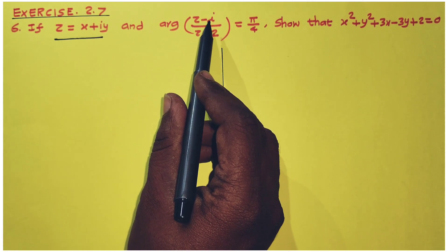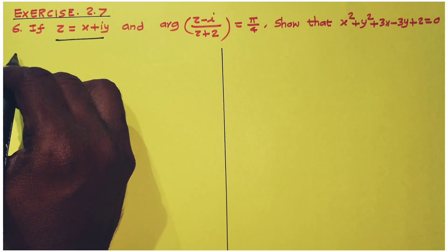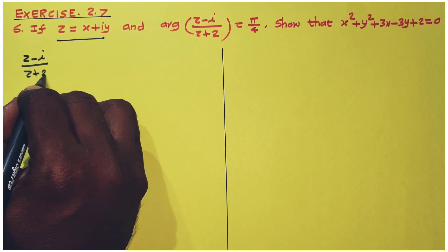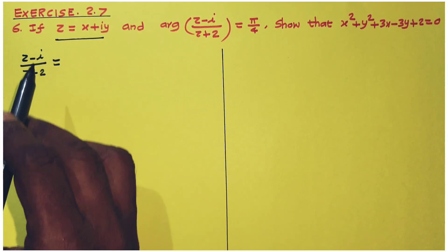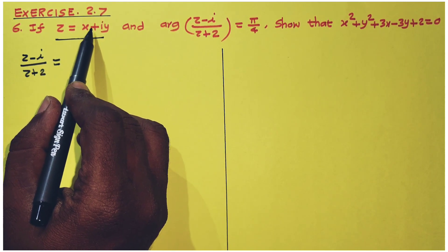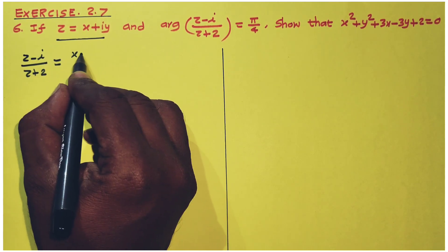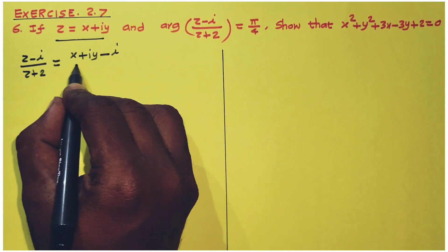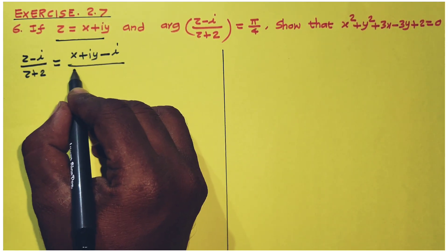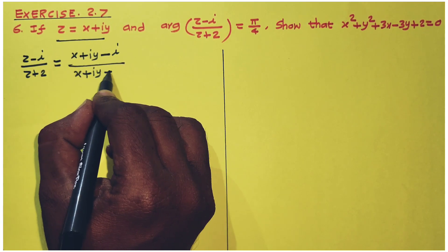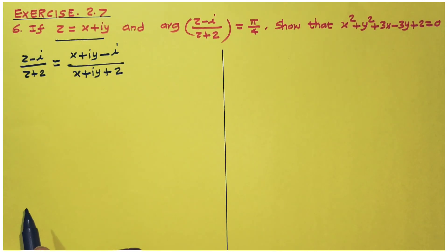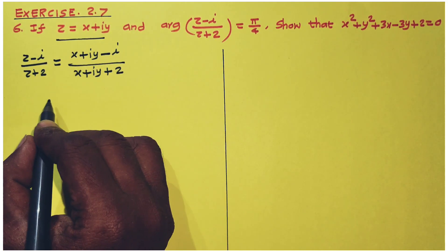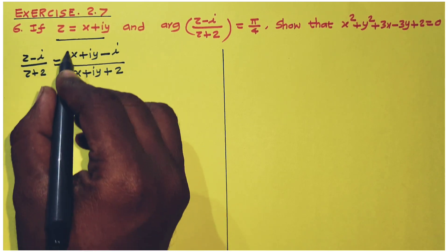The modulus of the complex number (z minus i) divided by (z plus 2). Substituting z equals x plus iy, we get (x plus iy minus i) divided by (x plus iy plus 2). Now we separate the numerator and denominator into real and imaginary parts.